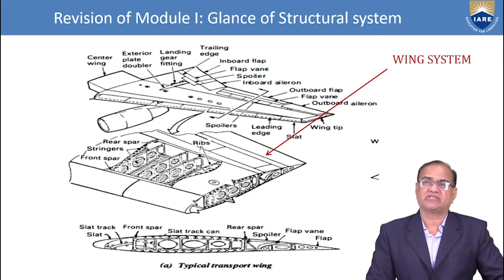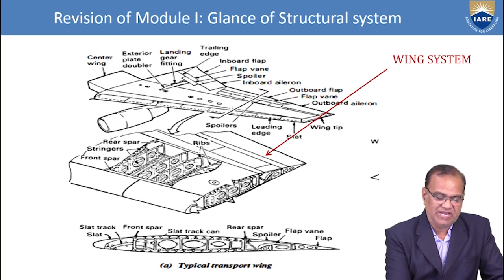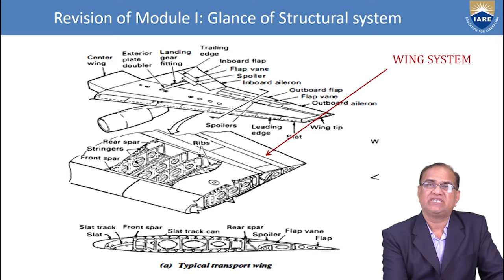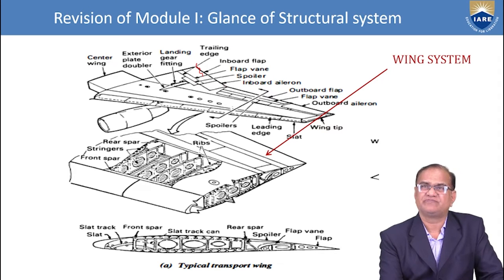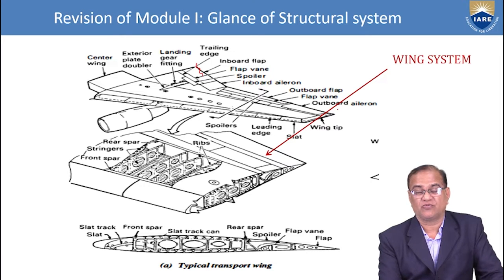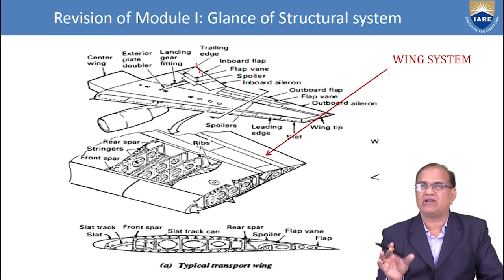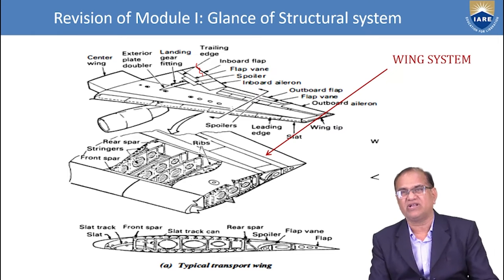I am going to show you some very important parts of the wing. Starting from the center wing exterior plate doubler, here is the landing gear fitting where the landing gears are fixed, then the trailing edge, the inboard flap, flap vane, and here is a spoiler — it is used to spoil the lift and increase the drag. Then we have the inboard aileron, outboard flap, flap vane, and outboard aileron.